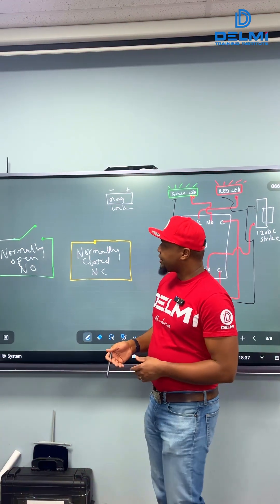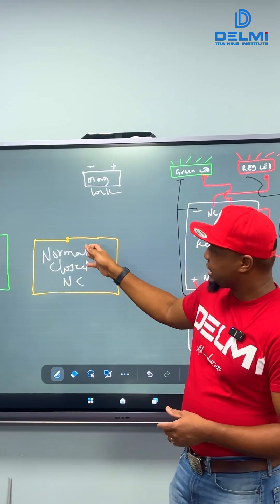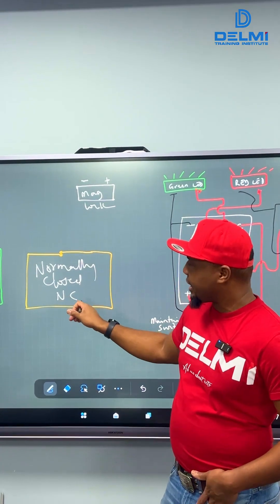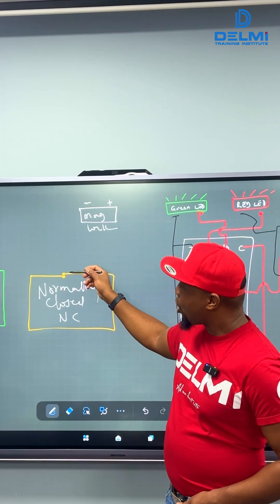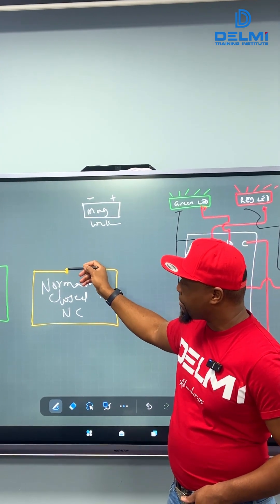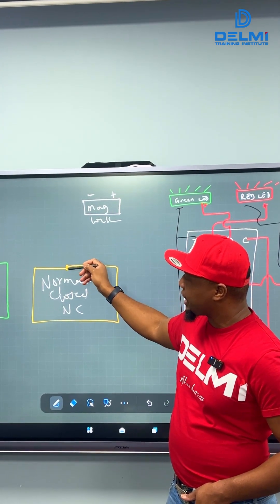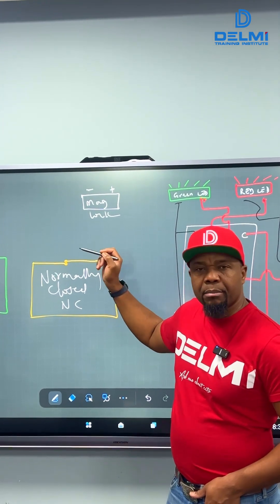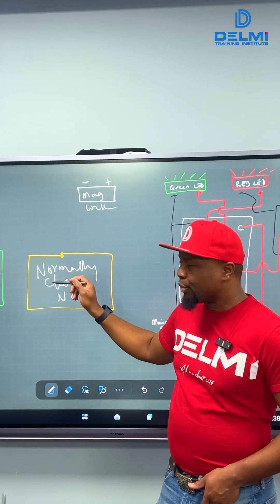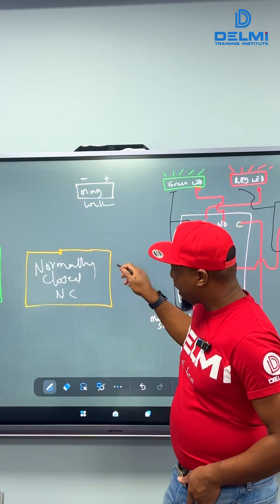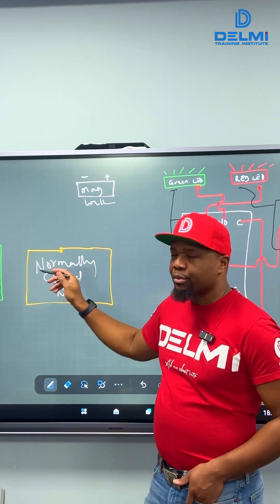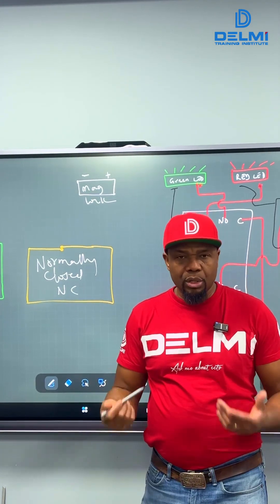However, on this one, which is a normally closed, also designated as NC, there is always going to be a communication point or a contact point between the pole and the throw, allowing electricity or electrons to flow through the circuit at all times.